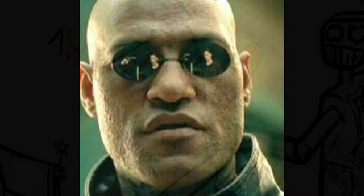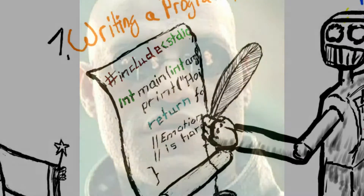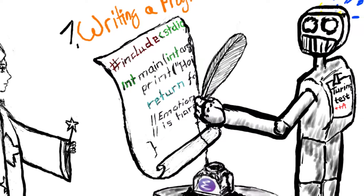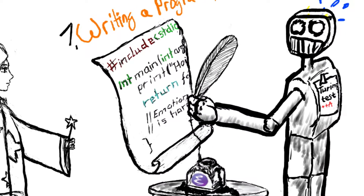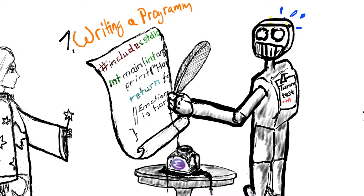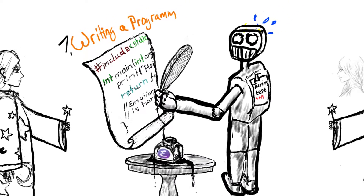What if I told you that computer programming actually has a lot in common with magic? Consider this: software programs are written in code which, like a sorcerer's spell, is rife with strange words and arcane symbols. And indeed, this sorcerer's spell we also call the source code.